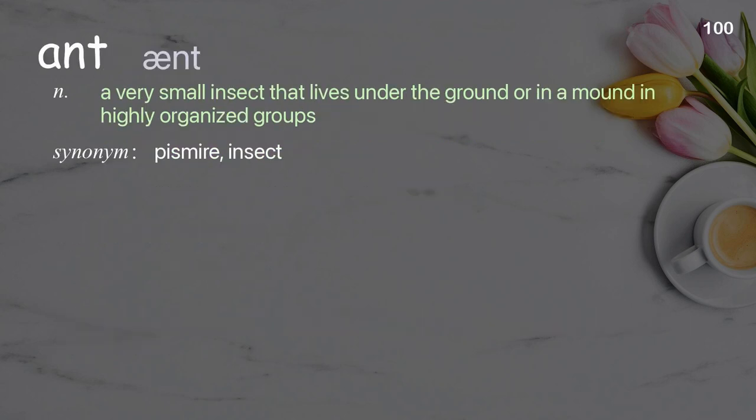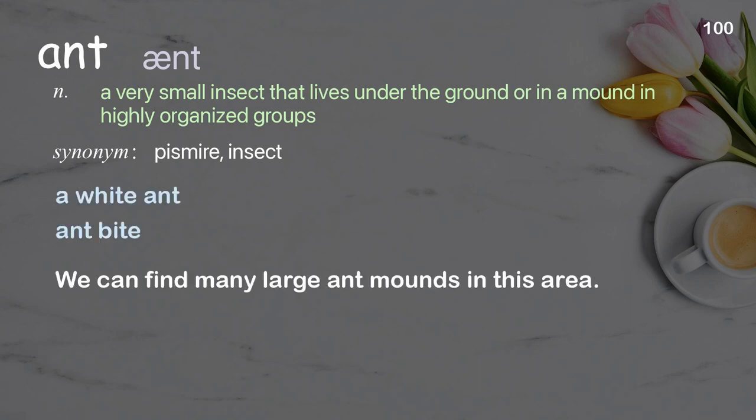Ant. A very small insect that lives under the ground or in a mound in highly organized groups. Examples: a white ant, ant bite. We can find many large ant mounds in this area.